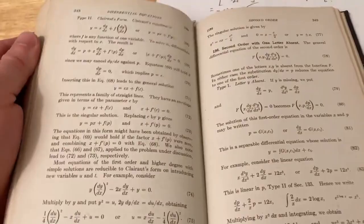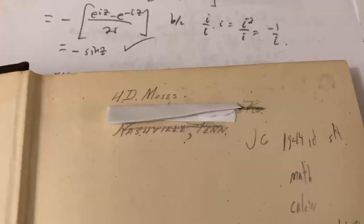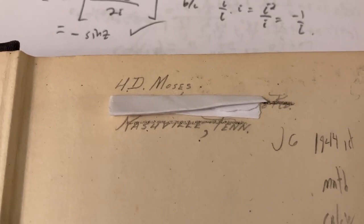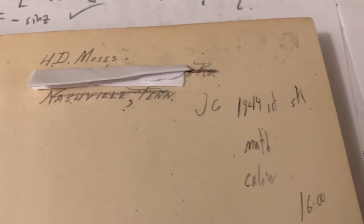Apparently the previous owner was H.D. Moses. I don't know who that was. And they're from Nashville, Tennessee. And I put a little piece of paper there to cover their address because it's probably still a working address. $16. So maybe they paid $16 for it. And then here's their last name again, Moses.